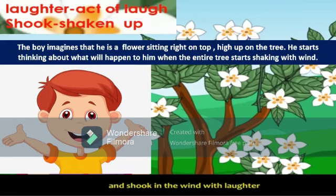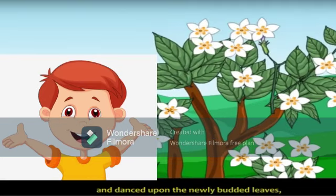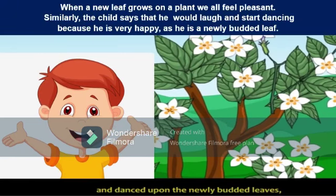Laughter means the act of love. Shook means shaken up. The boy imagines that he is a flower sitting right on top, high up on the tree. He starts thinking about what will happen to him when the entire tree starts shaking with wind, and danced upon the newly budded leaves. When a new leaf grows on a plant, we all feel pleasant.